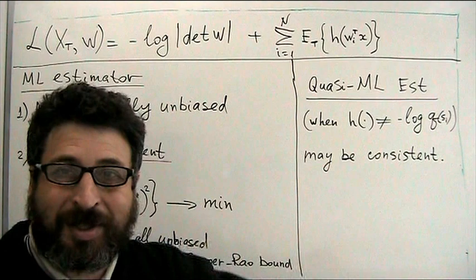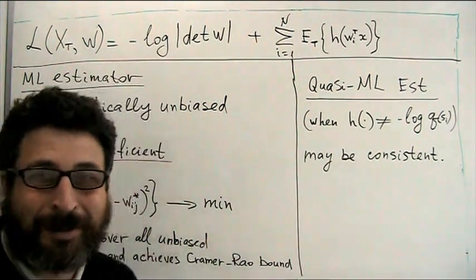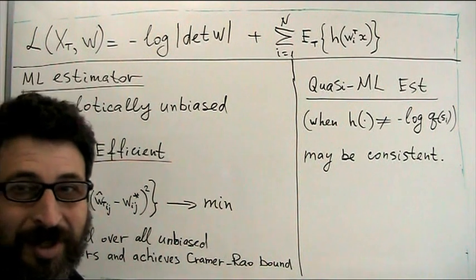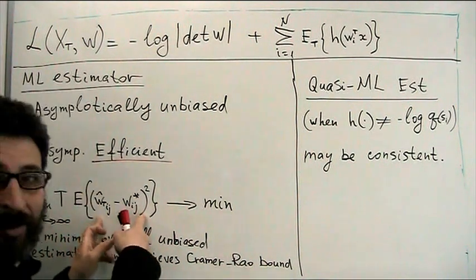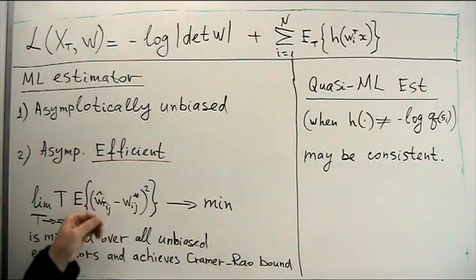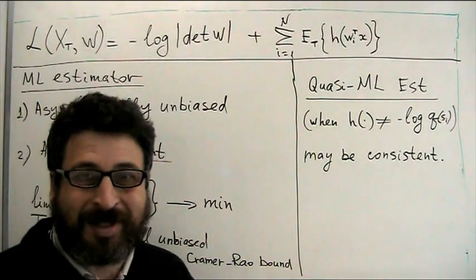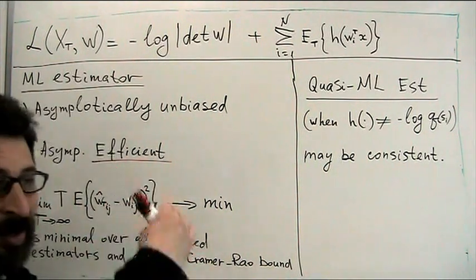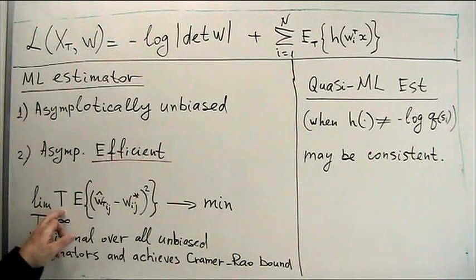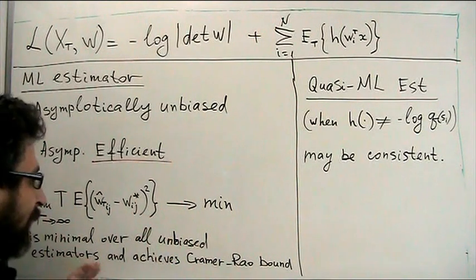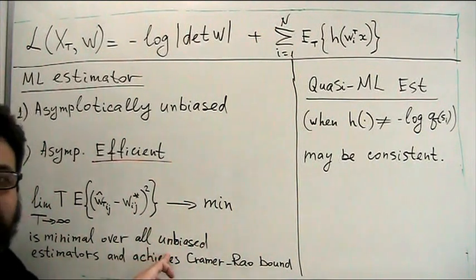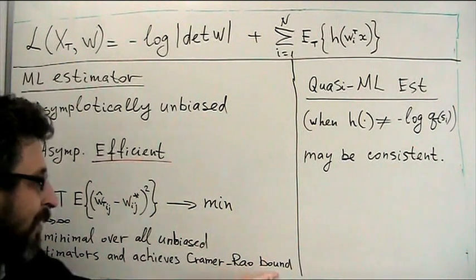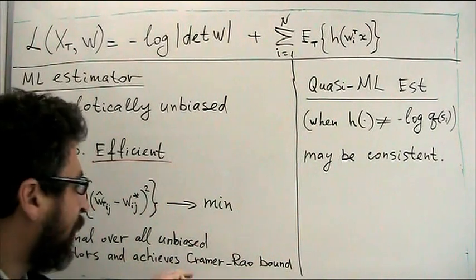So, I mean, expectation of our estimate goes to right value. And more important, it's asymptotically efficient. If we will consider a mean squared error of our estimator, it will decrease with sample size increasing. But the expectation of this squared error will decrease as about 1 over t. So, if we multiply by t sample size, we get in limit some constant. And this constant is minimal over all possible unbiased estimators. And it's provided by the famous Cramer-Rao bound.